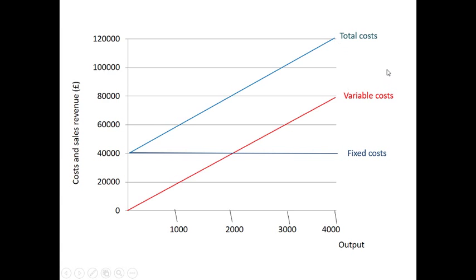So that's all our costs plotted. We now need to plot our sales revenue. Our sales revenue was £40 for each unit of output sold. So when I sell zero units of output, my total revenue is obviously going to be zero. So this is where the total revenue line emerges. In this case, if I sell 1,000 units, my total revenue is going to be £40,000. When I sell 2,000 units, my total revenue is going to be £80,000, etc. And I get a line that looks like this.